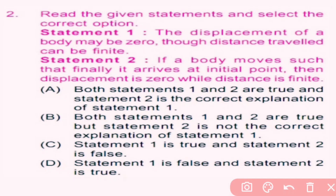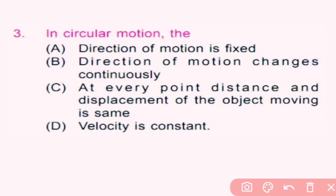Displacement is the shortest distance measured between the initial point and final point of the moving body. Suppose P is the starting point and the body moves in a circular path and comes back to its initial point — the distance travelled is finite but the displacement is zero. So statement 1 is true and statement 2 is also true. Option A — both statements 1 and 2 are true and statement 2 is a correct explanation of statement 1 — is the correct answer.